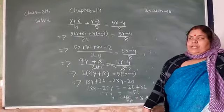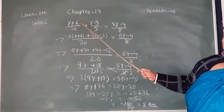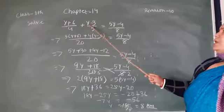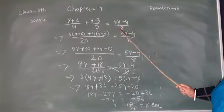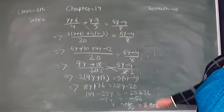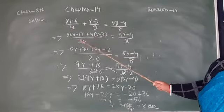This is the problem: (y+6)/4 + (y-3)/5 = (5y-4)/8. Here you see 4 and 5, and their LCM is 20.